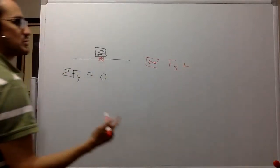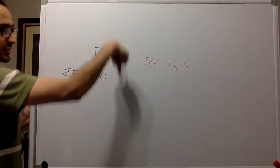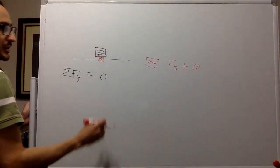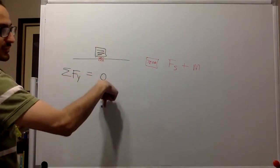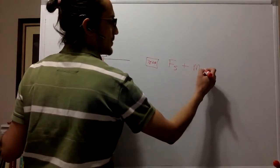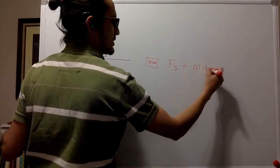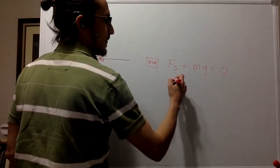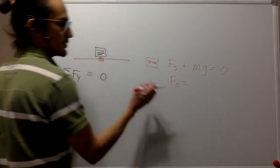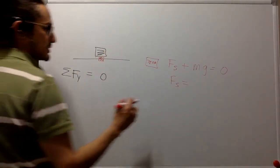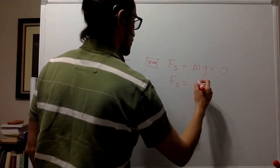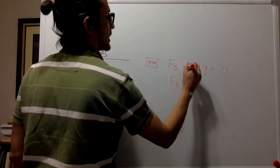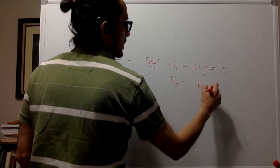And it's going to be pointing up because the person is pointing down and the force with which it is pulling down is the weight. So mass times gravity and it's equal to zero. So that means that the spring constant, which is the actual measurement that we're doing, so this one is negative. It's in the negative direction. It's going to be mg.